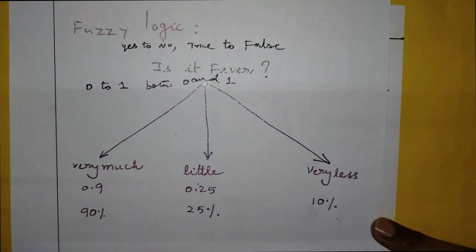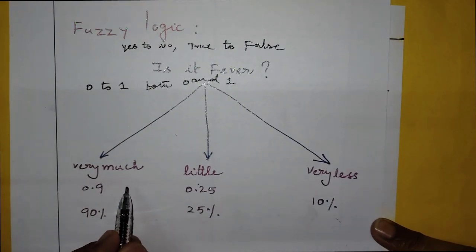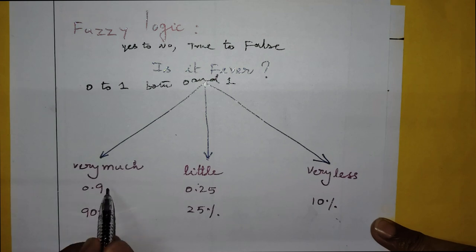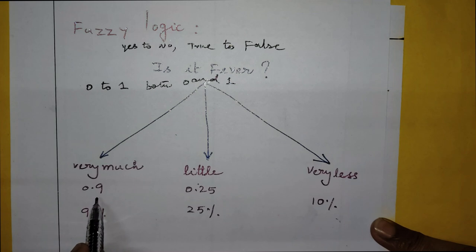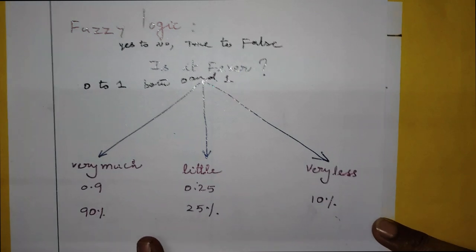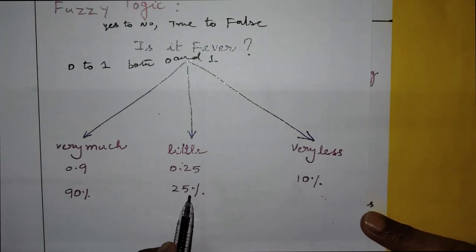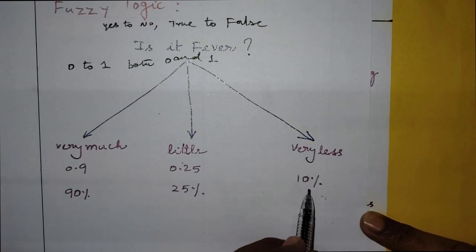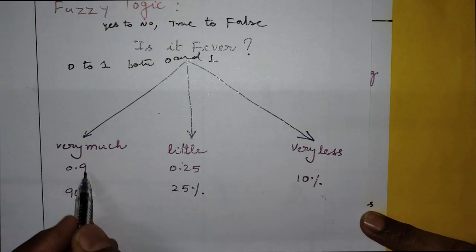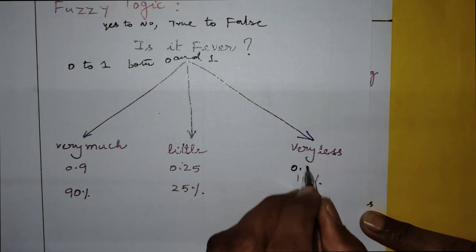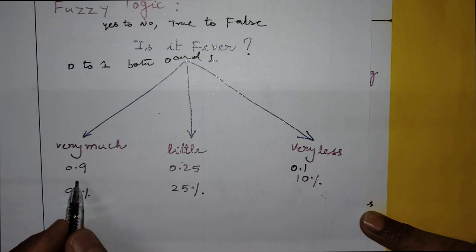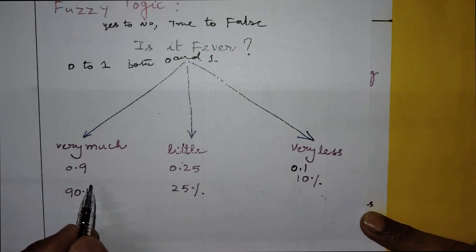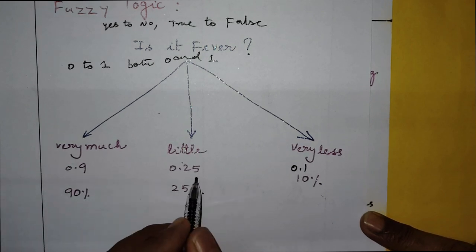For example, if you ask somebody whether someone has a fever: if the answer is 'very much,' that means high fever — that is 0.9, or 90 percent. If it is 'a little bit,' that is 0.25, or 25 percent. And 0.1 means very less, about 10 percent. These values — 0.25, 0.9, 0.1 — are all called the degree of membership in fuzzy logic.